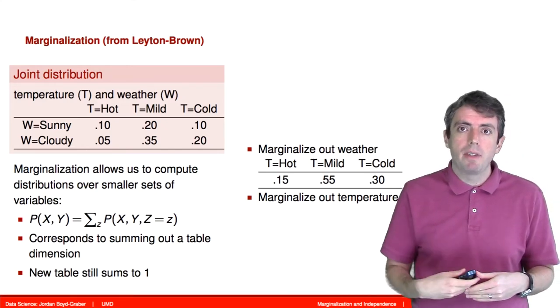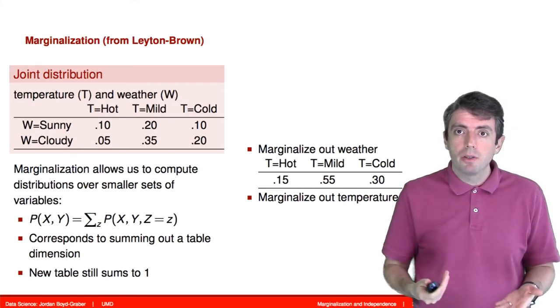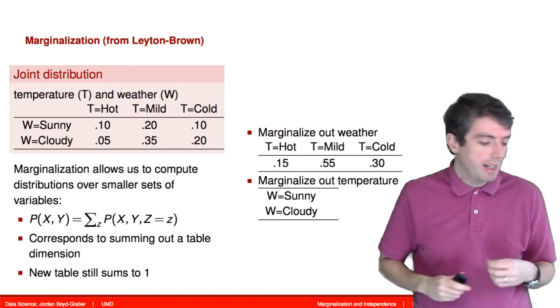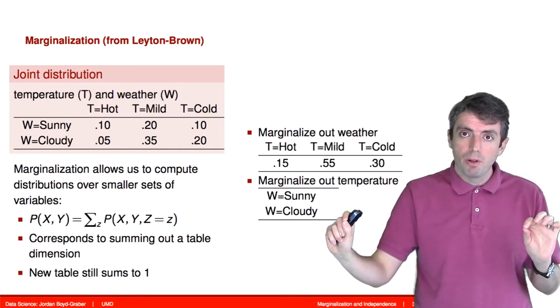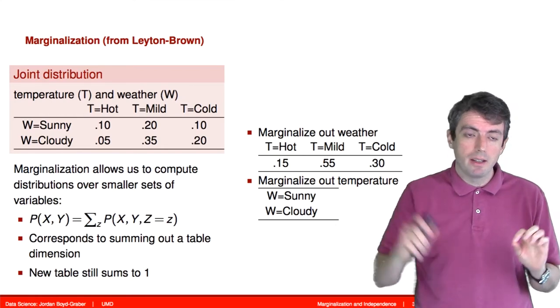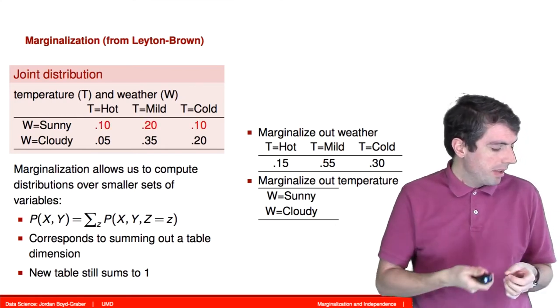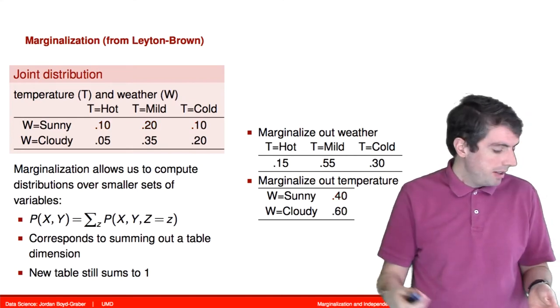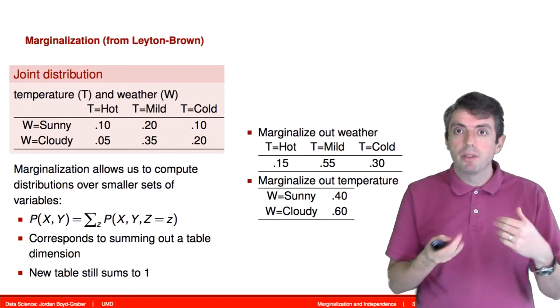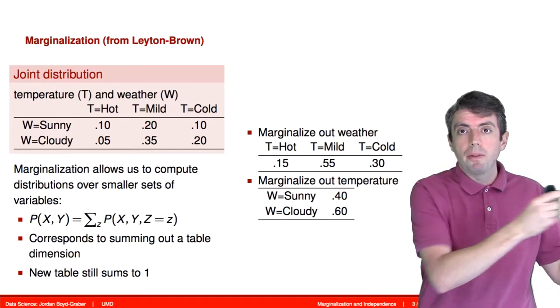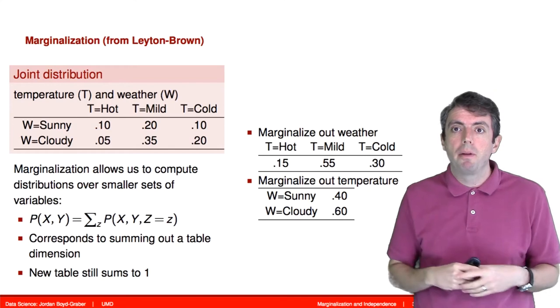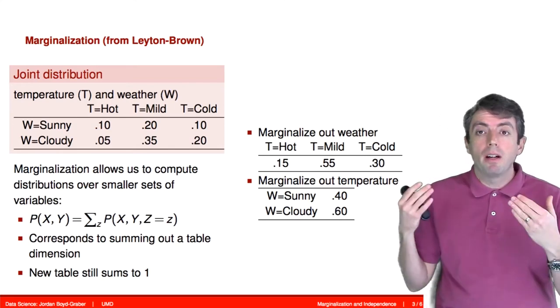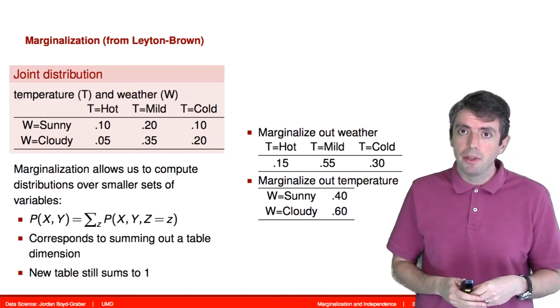We can do exactly the same thing by marginalizing out the temperature. This corresponds to summing out each row, adding those numbers together. So we take the three values for when it is sunny for each of the three temperatures, add those together and we get 0.4. We do the same thing for cloudy and we get 0.6. And again, these two numbers sum to 1. The original table was a probability distribution. The new table that we produce is also a probability distribution. So marginalization is a very important operation that we apply to joint probability distributions.